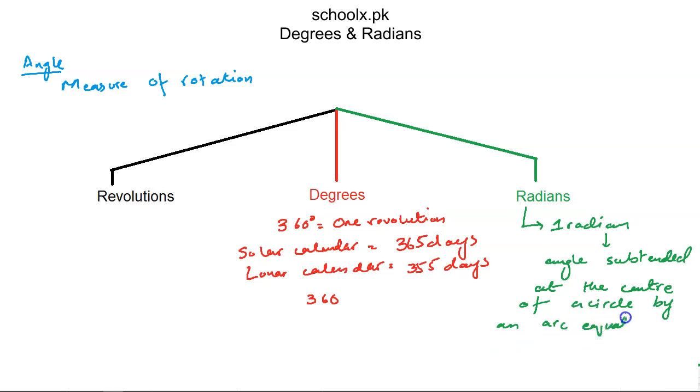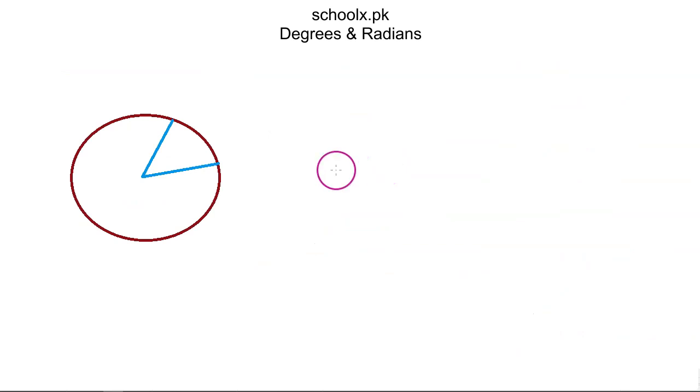The arc is some part of the circumference which is equal in length to the radius of the circle. So if we have a circle, and this is r, this is r, this is r, then this angle will be equal to one radian. No matter how big the circle is, this angle will always remain one radian.